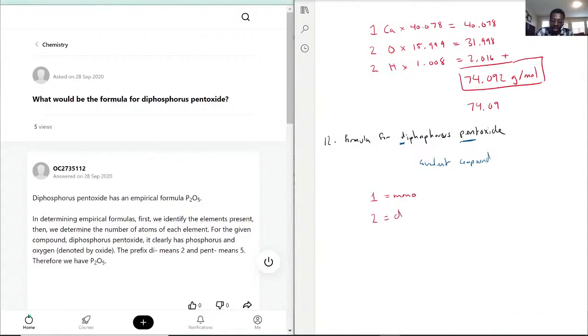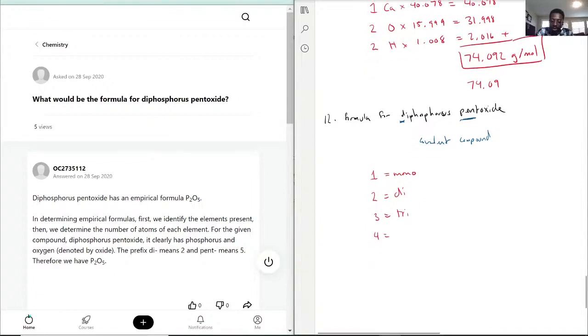And then two, that's di. Three is equal to tri. Four is equal to... No, it's not bute, okay? That's four when you're naming hydrocarbons. Four would be tetra. Five is equal to penta, and six should be hexa.